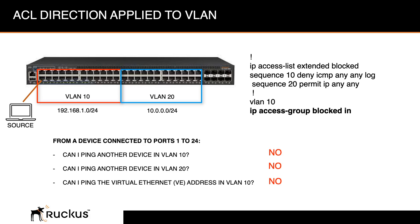This is different than how it worked before, so it's important to cover. My source is connected to VLAN 10 in the 192.168.1 subnet. Can I ping another device in VLAN 10? The answer is no, because ACLs are applied to the VLAN from the perspective of the interfaces in that VLAN. For any interface in VLAN 10, that traffic filter gets applied inbound — so when traffic comes from the source into the interface in VLAN 10, ping gets denied.